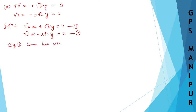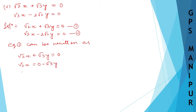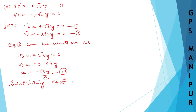Equation number 1 can be written as: root 2x plus root 3y equals 0. Transfer root 3y to the other side, so x will be equal to minus root 3y divided by root 2. This is equation number 3. Now substitute equation number 3 into equation number 2.